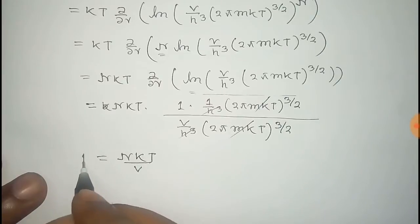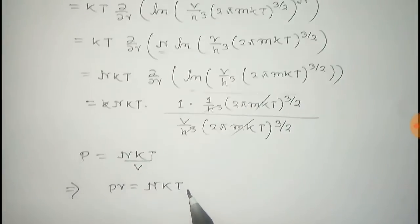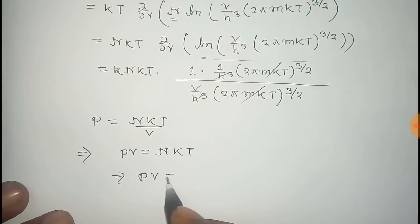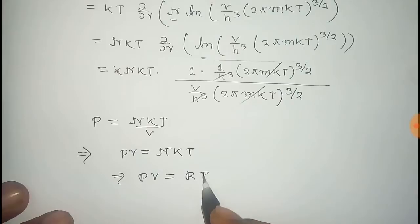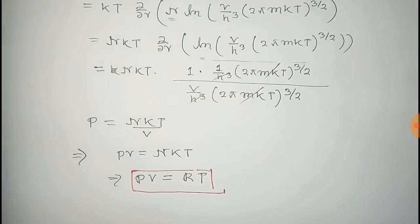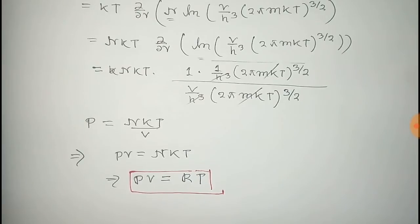So we get P equals N k T over V. From this PV equals N k T, and we can write N times k as R, so PV equals RT. That is the equation of state that we have to derive, which is also the ideal gas equation.